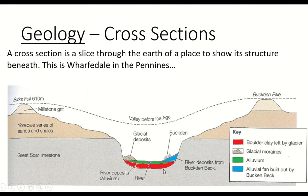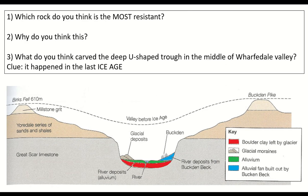I've got some questions relating to this cross-section. You can also see there's even more complex superficial geology in this very specific area - this valley where you've got boulder clay, alluvium, there's a river here indicated by a little triangle, glacial deposits, and there's a place called Buckton which is a little settlement within that area. Using a bit of common sense, I'd like you to figure out the answers to three questions: which of those rocks is the most resistant? Why do you think that? And what carved this U-shaped trough through the middle? Pause the screen, have a go, then I'll go through it.